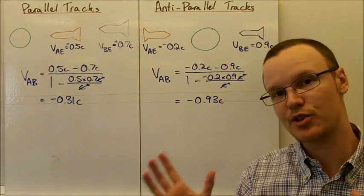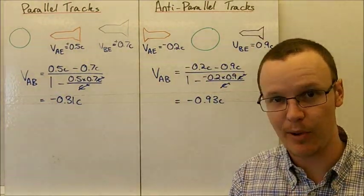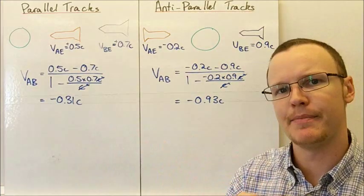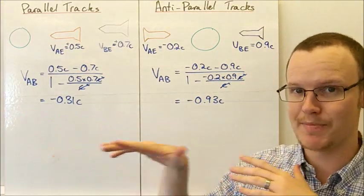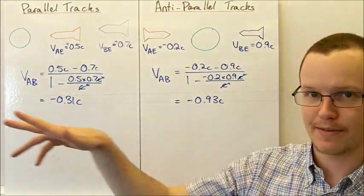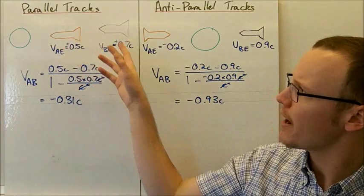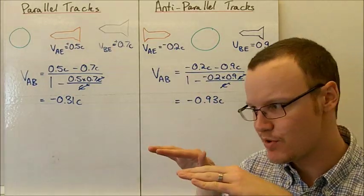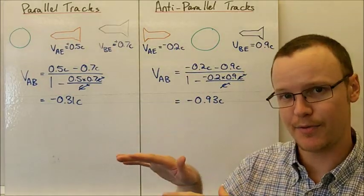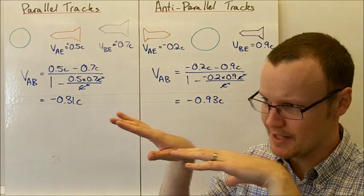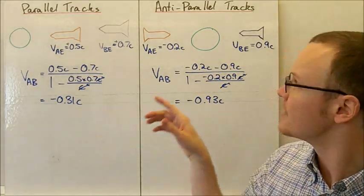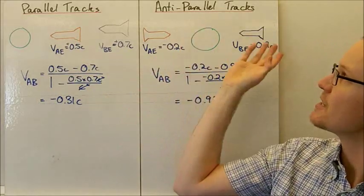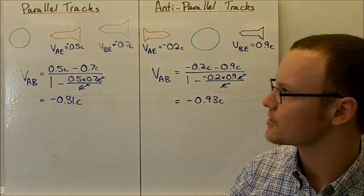Now we've got two different situations when looking at adding velocities in one dimension. Parallel tracks is where two objects are moving at perhaps different velocities in the same direction. Anti-parallel tracks is where they're moving in opposite directions.